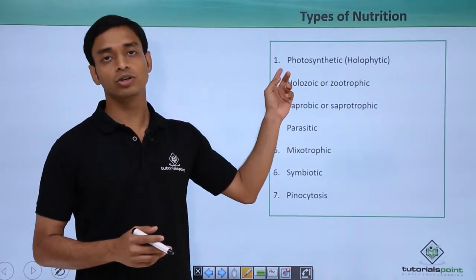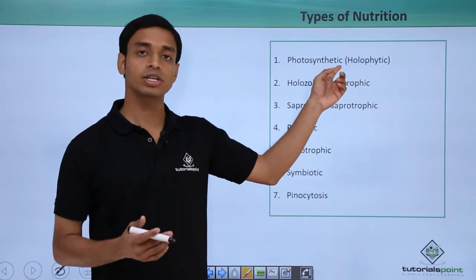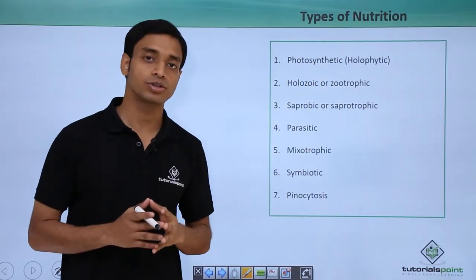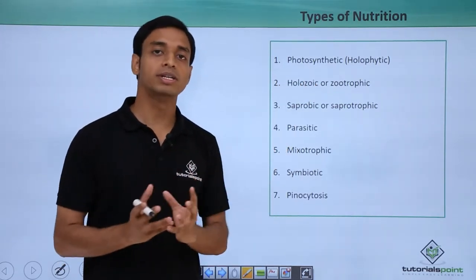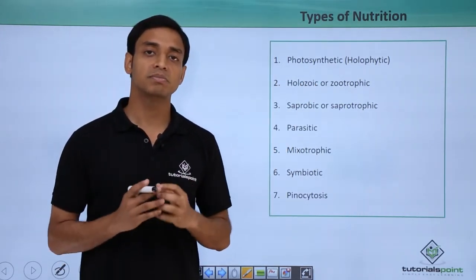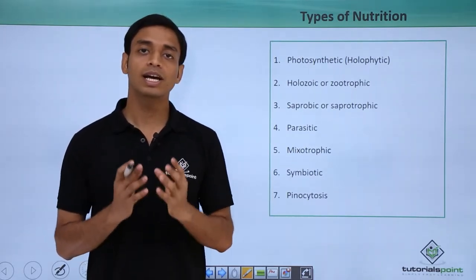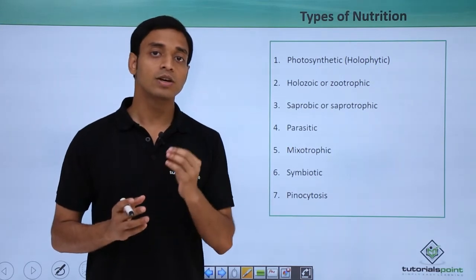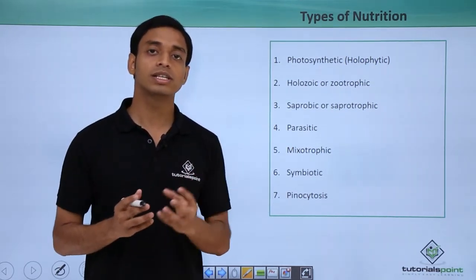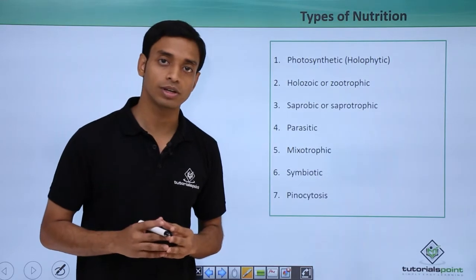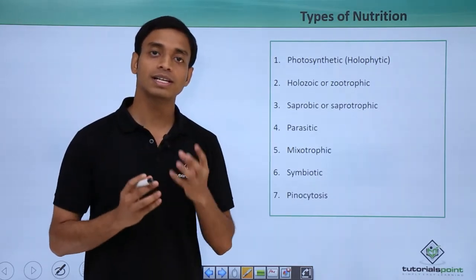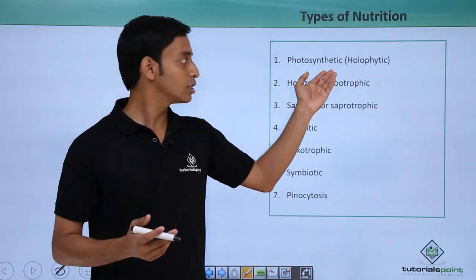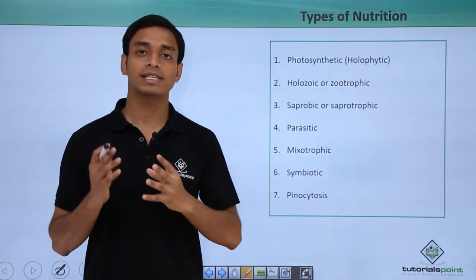The first type we are going to discuss is known as photosynthetic type of nutrition, which is also known as the holophytic type of nutrition. This is a very common type — photosynthetic means they can prepare their own food with the help of carbon dioxide and sunlight. They will have the presence of photosynthetic pigments like chlorophyll. So with the help of chlorophyll, sunlight, and carbon dioxide, they can prepare their own food. This is known as holophytic type of nutrition.